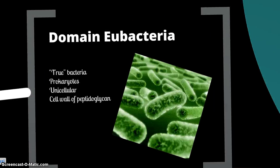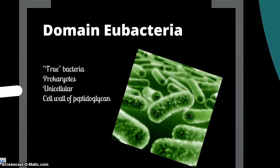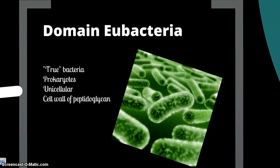The domain Eubacteria contains our true bacteria. They are prokaryotes, meaning they don't have a nucleus, and they're unicellular — they don't grow into multicellular organisms. They have a cell wall made of a protein called peptidoglycan. This is a word you need to know, so make sure you put it in your notes.